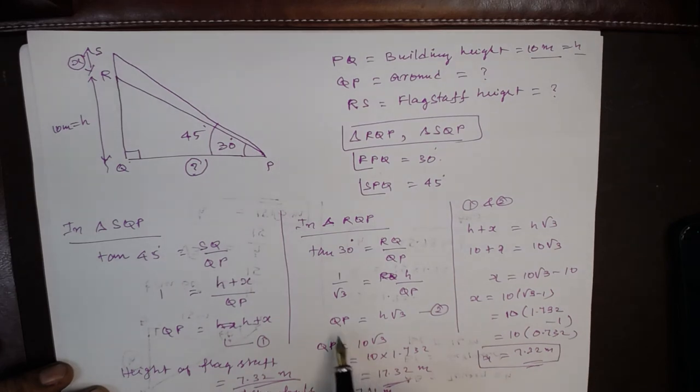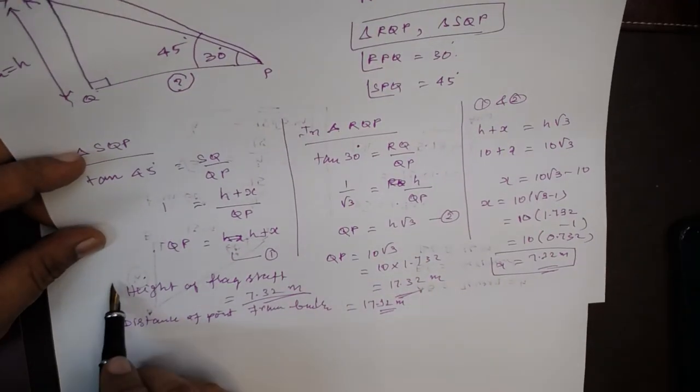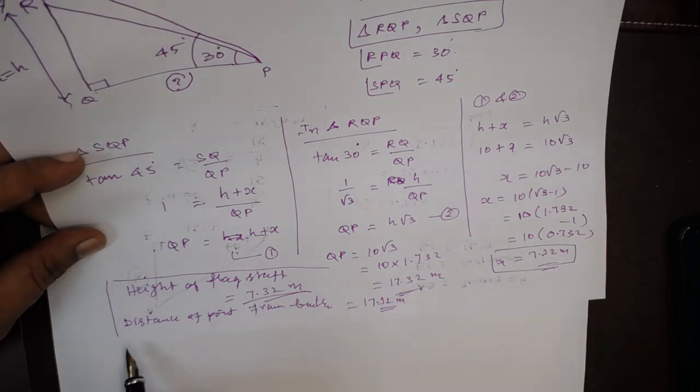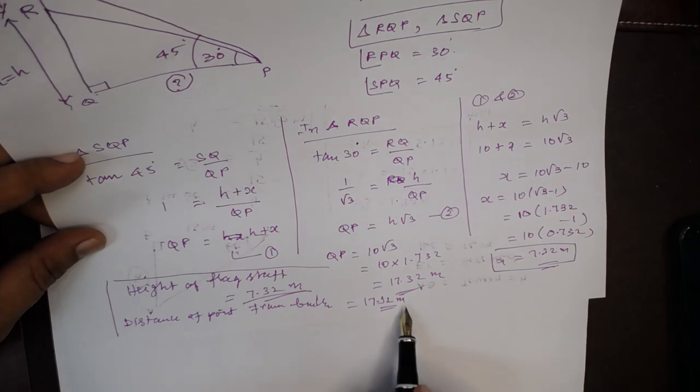And we have already got H. So QP is equal to 10 root 3. Root 3 is 1.732, so it is 17.32. So the answer is height of the flagstaff is 7.32 meters. Distance of the point from the building is 17.32 meters.